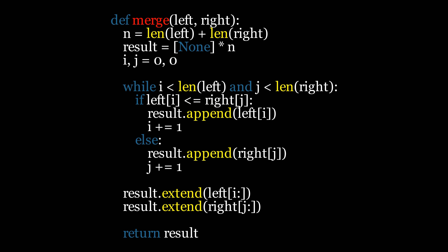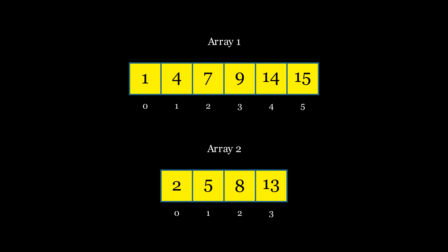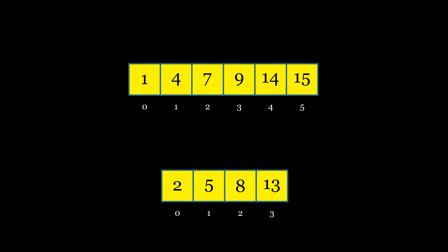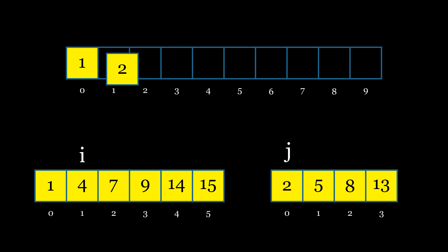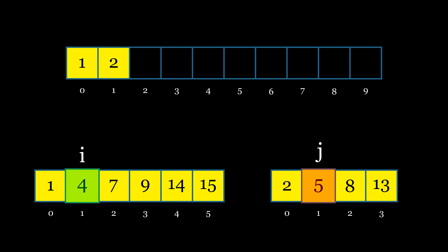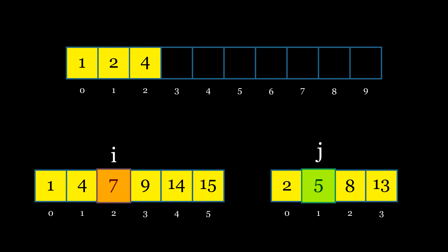This extra space is proportional to the size of the input arrays, making the space complexity linear. Now let's see this visually. Imagine we have two sorted arrays, array 1 and array 2. The algorithm will first create a new array to hold the merged result. It will then initialize two pointers, i and j, to track the current index of each respective array. As the algorithm compares the elements at these indices, it will copy the smaller element into the new array and increment the corresponding pointer by 1. This process continues until one of the arrays is fully traversed, after which the algorithm appends any leftover elements from the other array, ensuring all elements are included in the final sorted array.